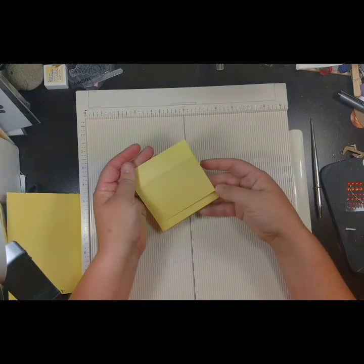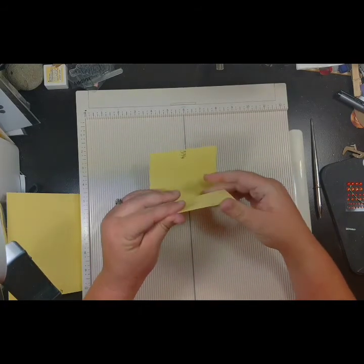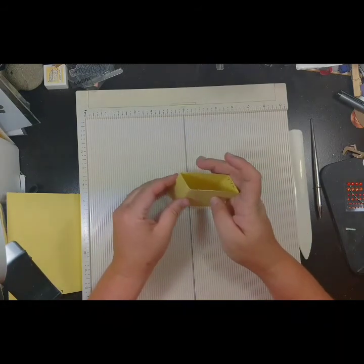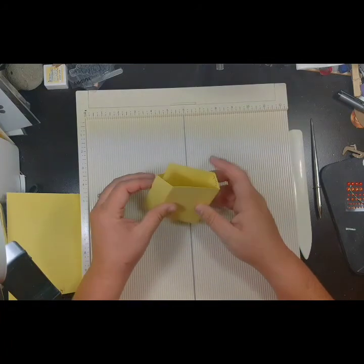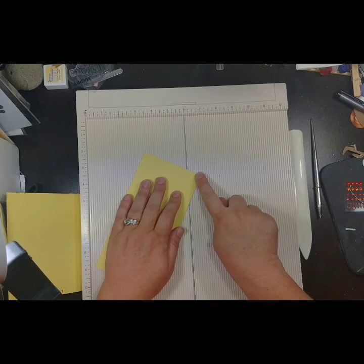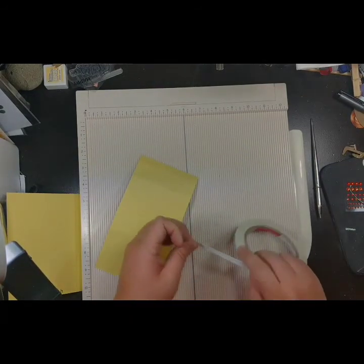Once I start to fold along the score lines, you can see the outer sleeve of the box start to take shape. I'm using my fingers to crease the box, but if you'd like to use a bone folder for more crisp edges you may do so.